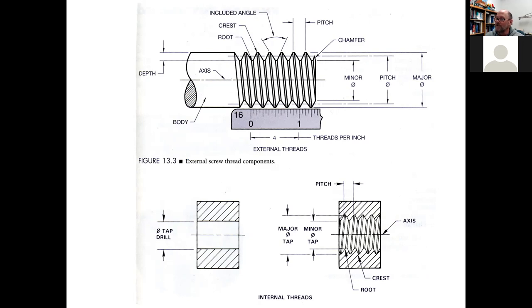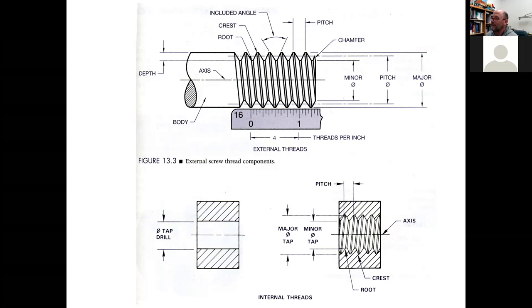The minor diameter is along what are called the roots of the threads — the smallest diameter. You have the crest diameter considered the major diameter, and you have roots, crests, and then the included angle — the angle between two corresponding threads on the profile. The distance between threads is called the pitch, and one full rotation of the fastener produces a lateral movement of one pitch.